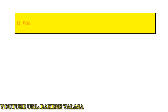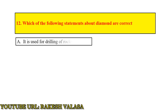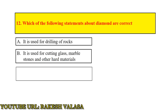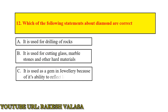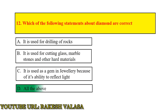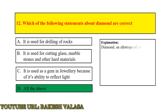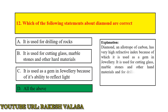Question number 12: which of the following statements about diamond are correct? Answer: all of the above. Explanation: diamond, an allotrope of carbon, has a very high refractive index, because of which it is used as a gem in jewelry. It is used for cutting glass, marble, stones, and other hard materials, and for drilling of rocks. It is a bad conductor of electricity and is the hardest material known.